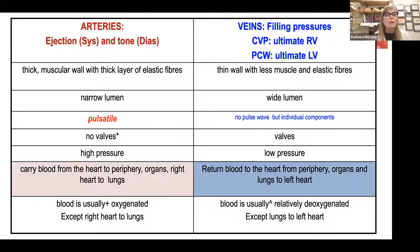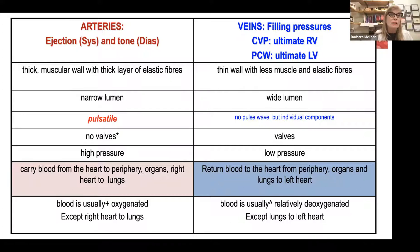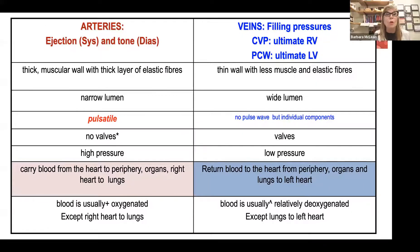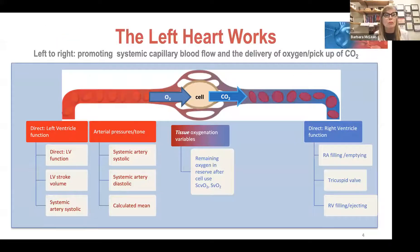Systemic veins return relatively deoxygenated blood to the right heart. Pulmonary veins are post-alveolar blood exchange, so pulmonary veins are returning reoxygenated blood to the left heart.